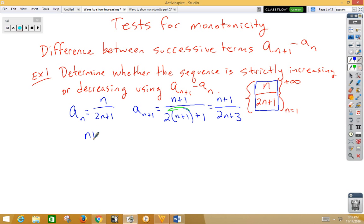So now we're doing n plus 1 over 2n plus 3 minus n over 2n plus 1, and we're trying to figure out, is that greater than 0? We'll just choose greater than 0 because we're going to try and assume that it's strictly increasing, but it could be strictly decreasing instead.